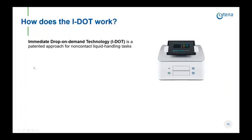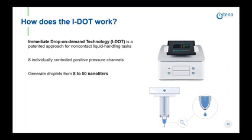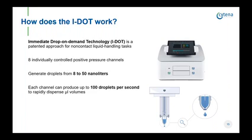Now let me introduce the IDOT, a benchtop instrument for low volume reagent dispensing. The IDOT technology generates droplets using a well-controlled pressure pulse applied to a liquid well with a small hole on the bottom. It comes with 8 individually controlled pressure channels, which can generate droplets with volumes between 8 and 50 nanoliters. Volumes in the microliter range can easily be addressed given that droplets can be generated at frequencies of 100 Hz.